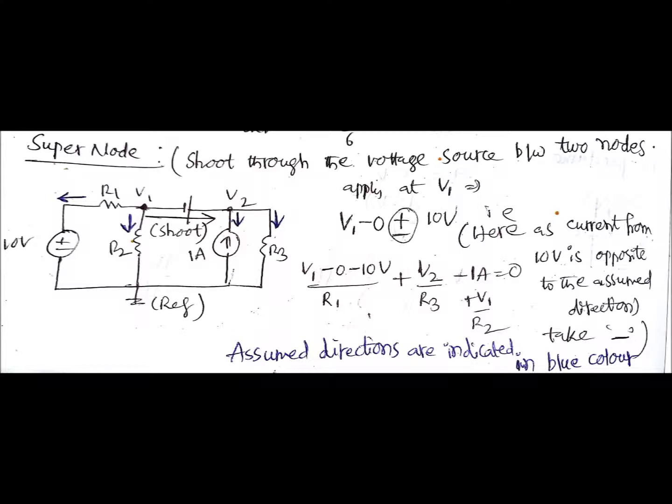What will be the current values? It is minus 1 amps because it is opposite to our considered direction, then again V2 by R3, that is positive. Like this you need to approach in case of super mesh and super node concepts. Thank you.